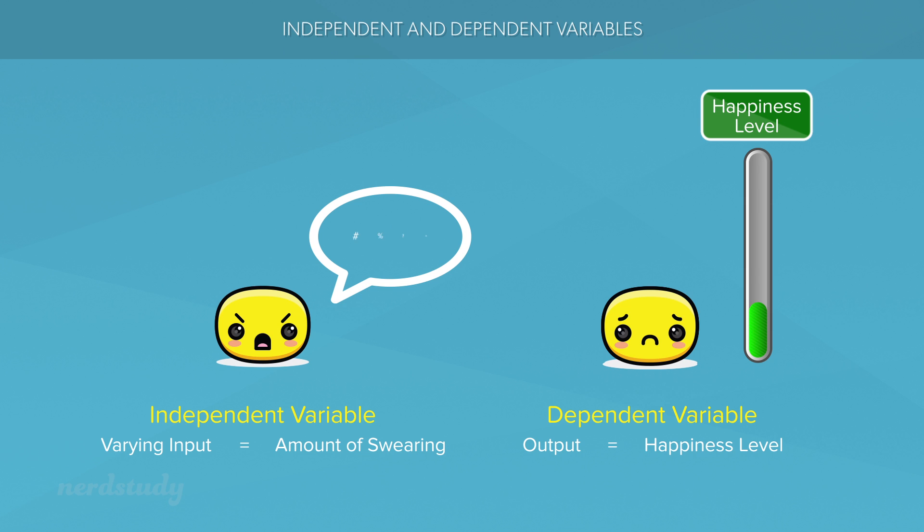Reversely, the less I swear at a person, the more happy that person is likely to become. And I know there are those rare exceptions of very weird people out there, but I'm talking in a general sense. Most of the times when you're swearing more at a person, a person is going to get less and less happy. So this is a completely different relationship because our independent variable increases and our dependent variable decreases.